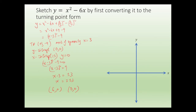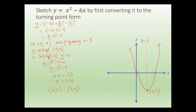So we can start sketching. The axis of symmetry is x equals 3, the turning point is (3, minus 9), and the x-intercepts are (0, 0) and (6, 0). Sketching it, this is y equals x squared minus 6x. Always remember to label your points.